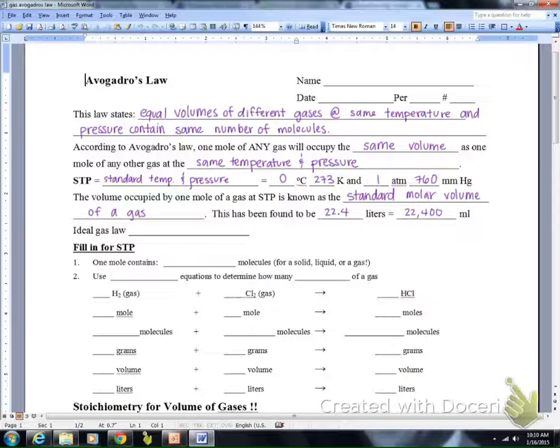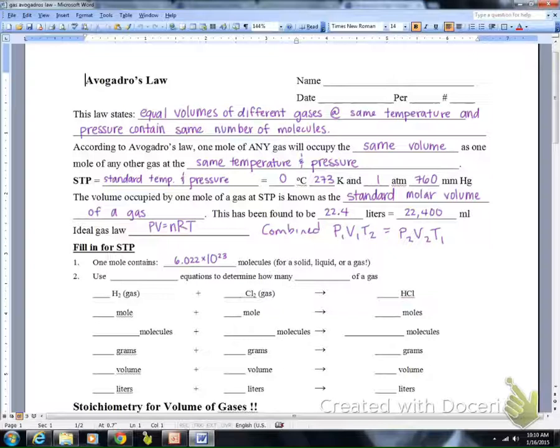Let's remind ourselves of the ideal gas law and the combined gas law. The ideal gas law is PV equals nRT, and the combined gas law is P1V1T2 equals P2V2T1. We're going to use both of these today. We can combine gas stoichiometry with either one depending on how you want to solve the problem.